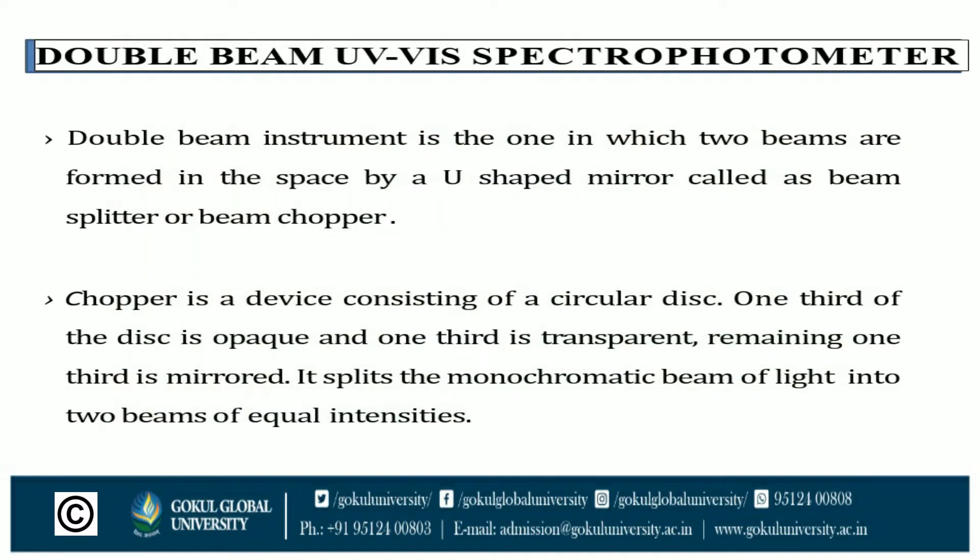Now, the double beam UV-visible spectrophotometer. The double beam instrument is one in which two beams are formed in space by a U-shaped mirror called a beam splitter or beam chopper.